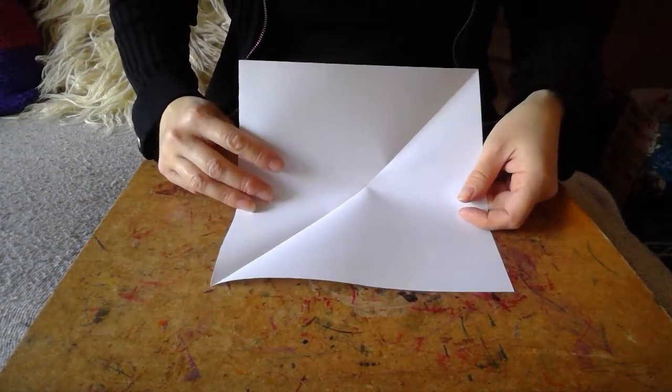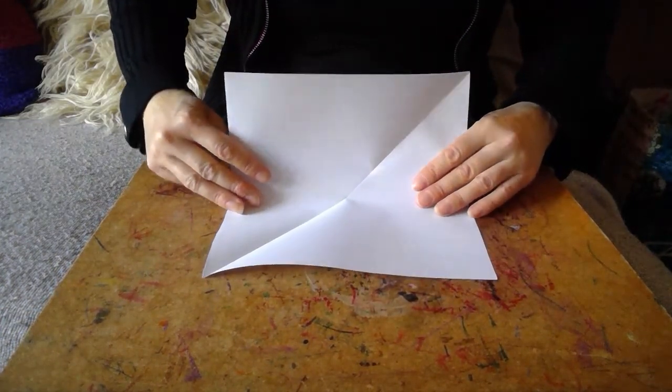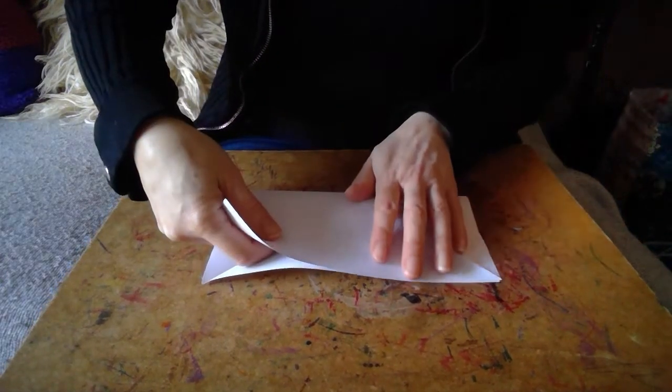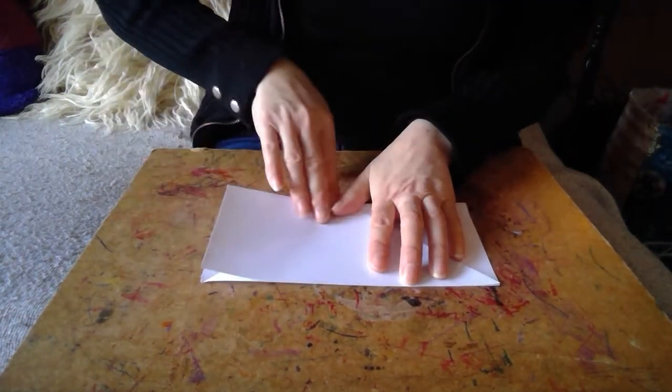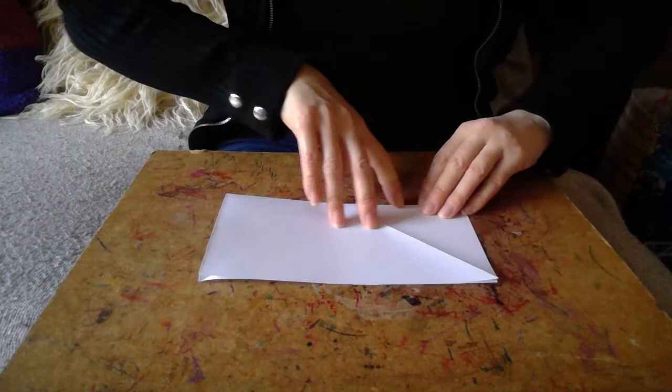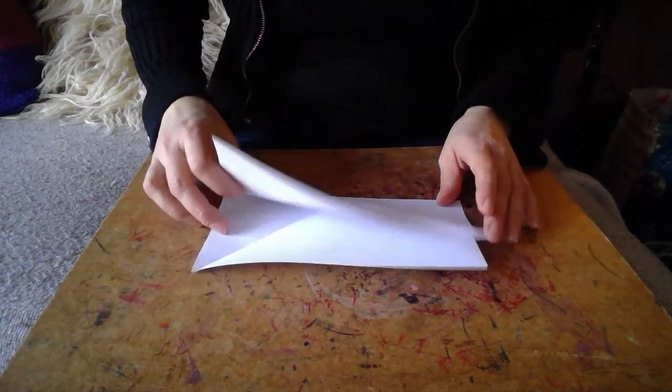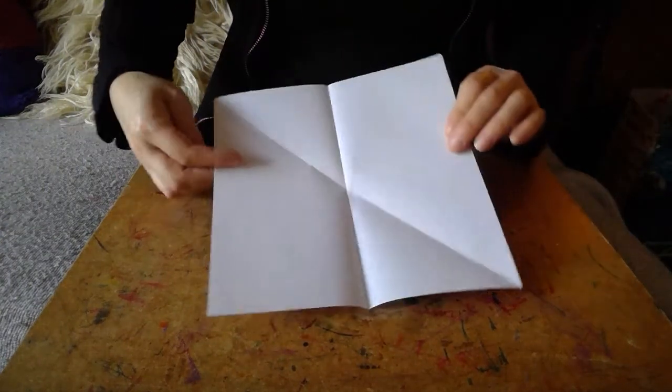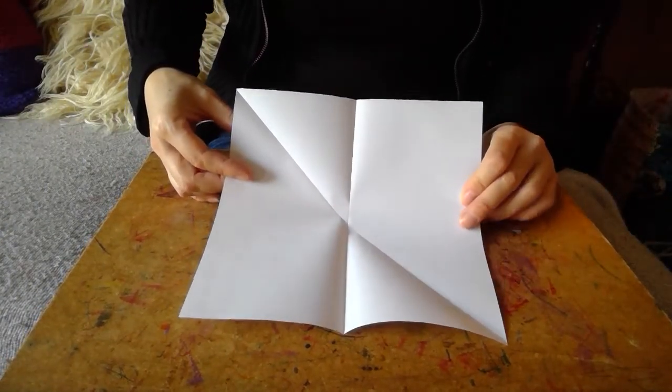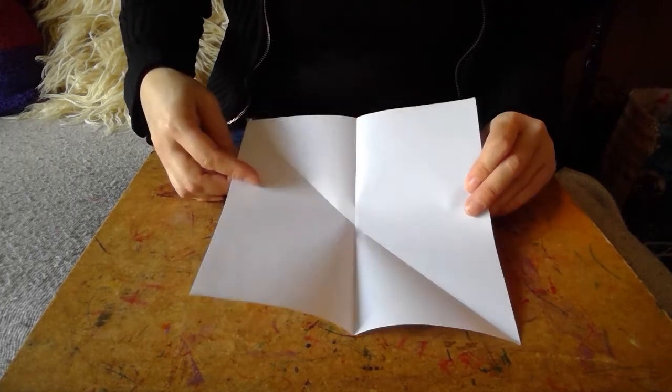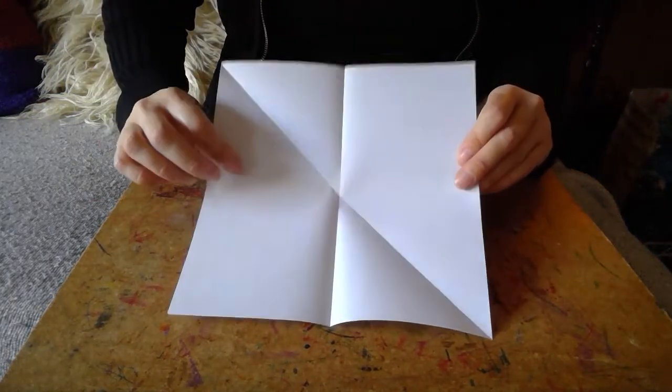So open your square. We're going to fold it in half to make a rectangle to give it a nice midway point. There we go. That's it. Now open it up. If you've got origami paper already, all you need to do is just fold it in half as a rectangle.